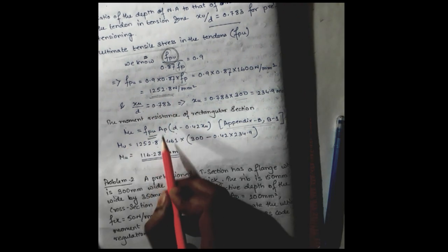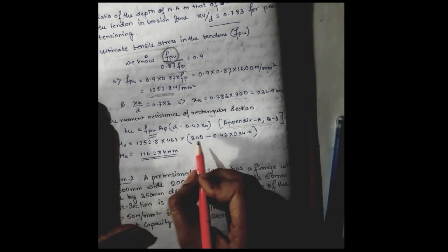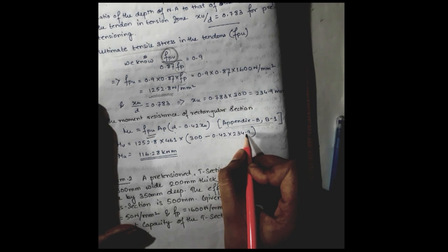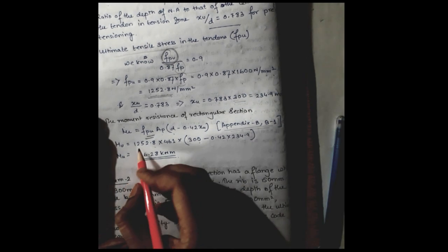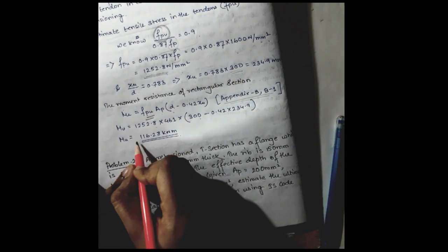So FPU we have calculated to be 1552.8 into Ap, which is the area of the pre-stressing steel, 461, into d is 300 minus 0.42 into 234.9. So the moment of resistance of this rectangular section will be...